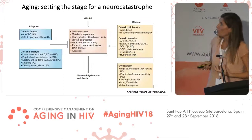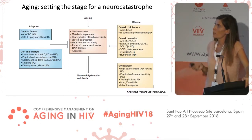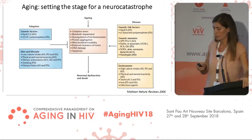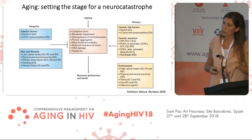As my colleagues said before, the cells in the brain are damaged by oxidative stress, DNA damage, inflammation, et cetera. And this is the scenario we have in old age. But in this scenario, we can have some risk factors or some protective factors for neurodegenerative diseases.